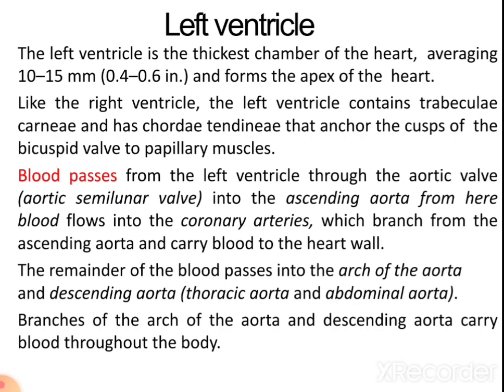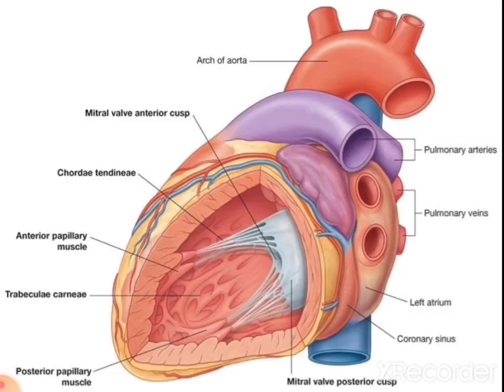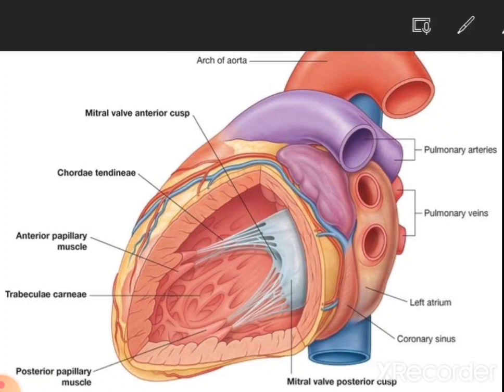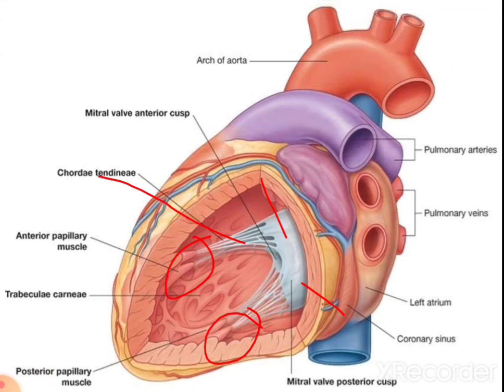The left ventricle is the thickest chamber of the heart, about 10 to 15 mm thick. Blood passes from here through the aortic valve into the ascending aorta, then to the coronary arteries, and through the descending and abdominal aorta to the rest of the body. The left ventricle contains the bicuspid valve with anterior and posterior cusps, anterior and posterior papillary muscles, and chordae tendineae controlling the opening and closing of the valves.